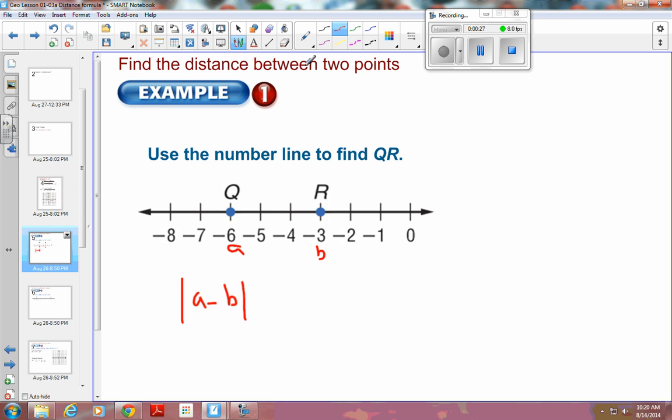So I'm going to take and fill in negative 6, bring down the minus sign, and this is a negative 3, so I'm going to put my negative 3 in there. And remember that two negatives right here become a positive, so it's actually negative 6 plus 3, so negative 6 plus 3 is negative 3, but I'm taking the absolute value of that, so my distance is 3.